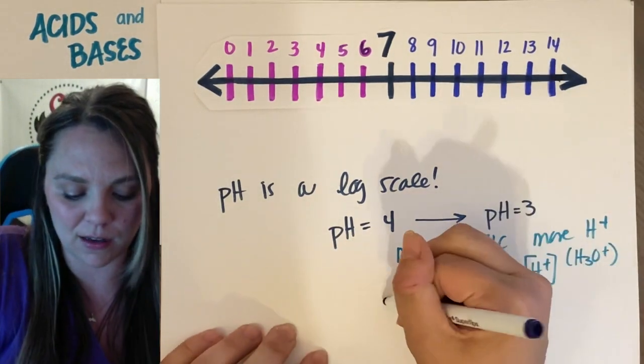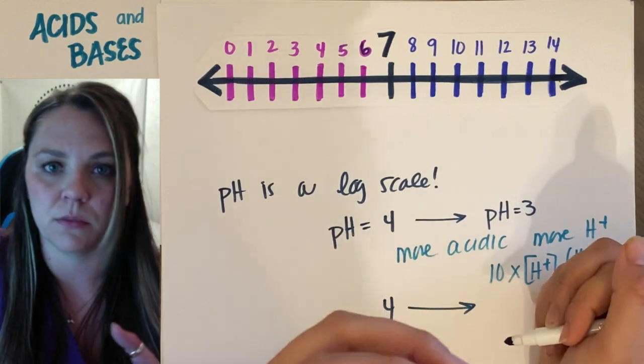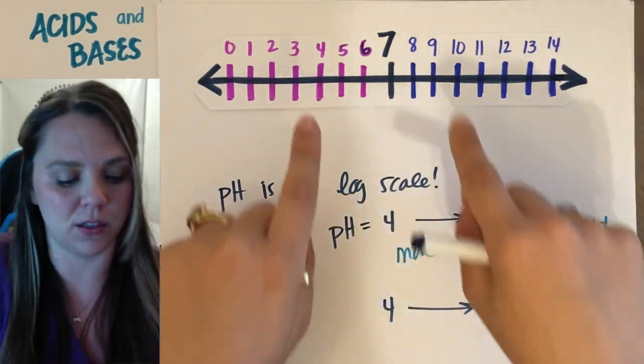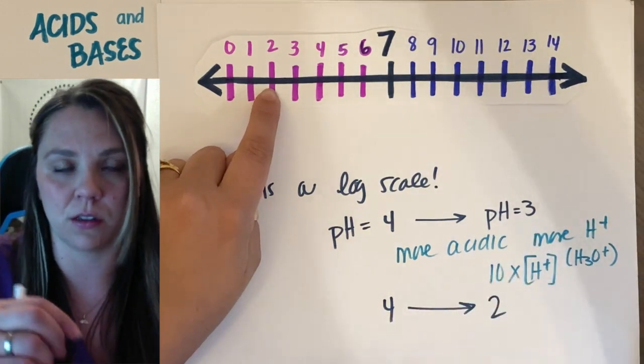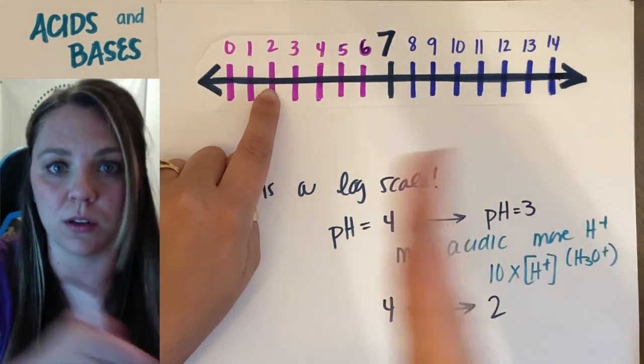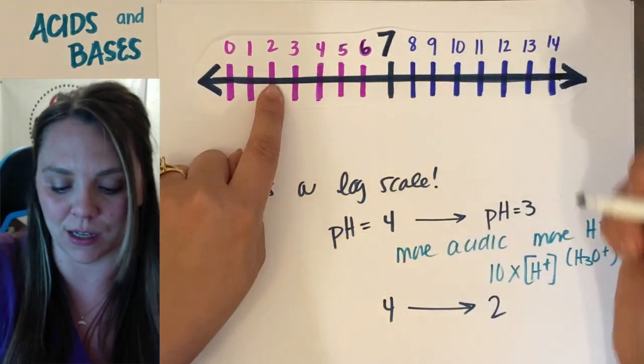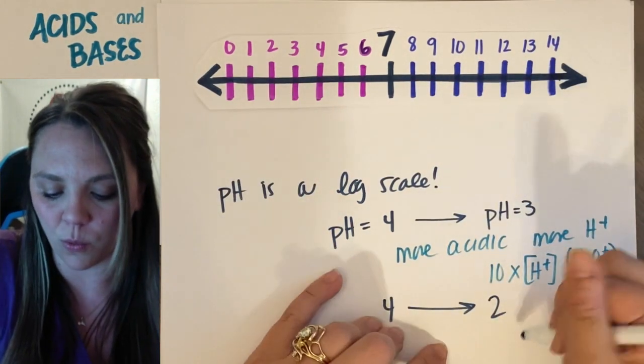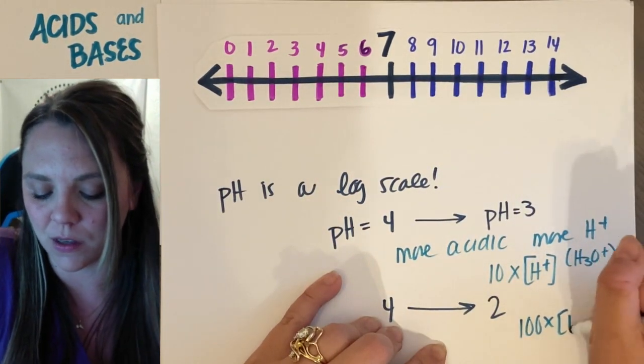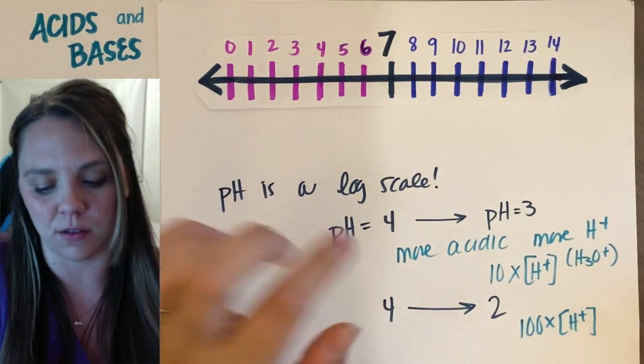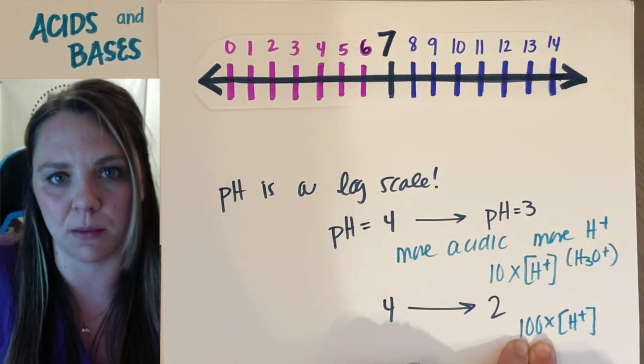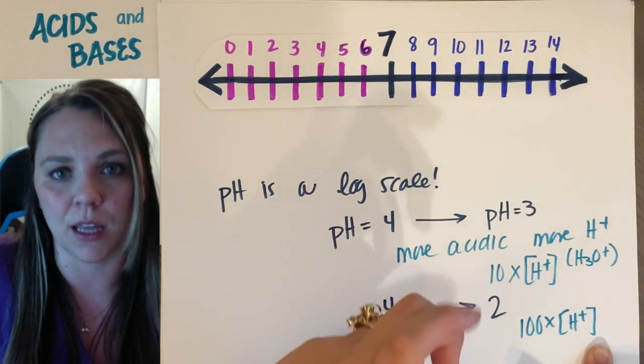If I had an acid that went from 4, and I added more acid to it, and it went down to a 2, I changed the concentration. I changed the pH from 4 all the way down to 2. I'm getting more acidic. That means now I have 100 times the hydronium concentration. I would have 100 times the amount of H+ in that solution.